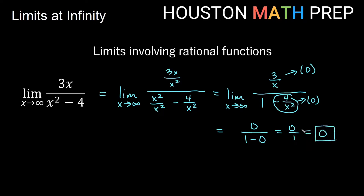So the limit as x approaches infinity of 3x over x squared minus 4 is 0. In pre-calculus terms, if you remember that this function has a higher power on the bottom than on the top, you would say it approaches the horizontal axis, or y equals 0. Same idea here.